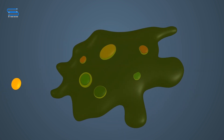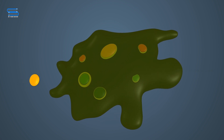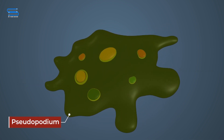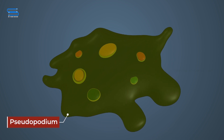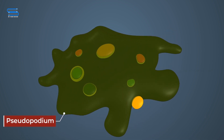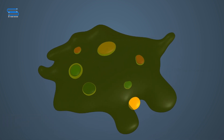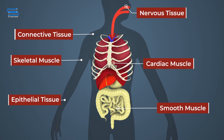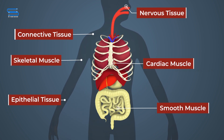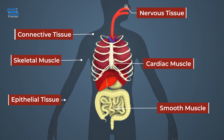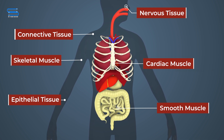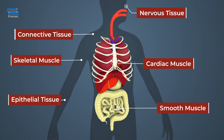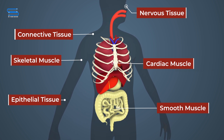A single-celled organism, such as the amoeba, can capture food, digest it, respire, excrete, grow, and reproduce. Similar functions in multicellular organisms are carried out by specific groups of specialized cells that form different tissues. These tissues, in turn, form the various organs.